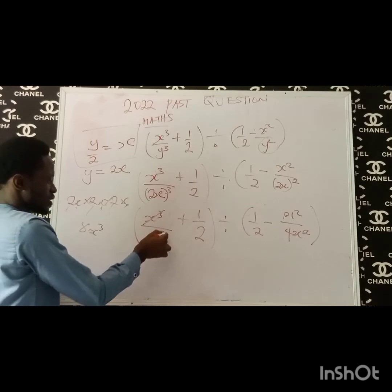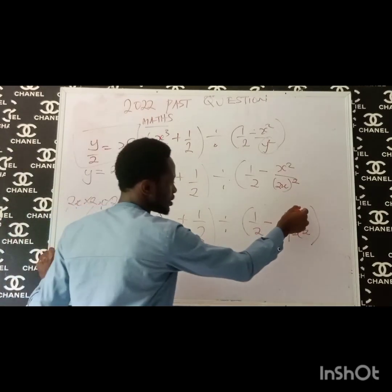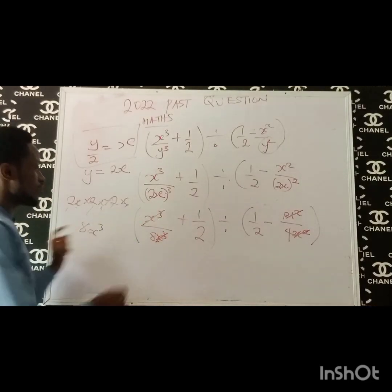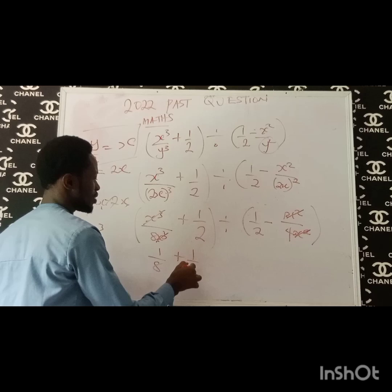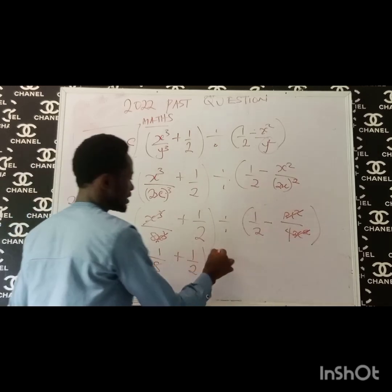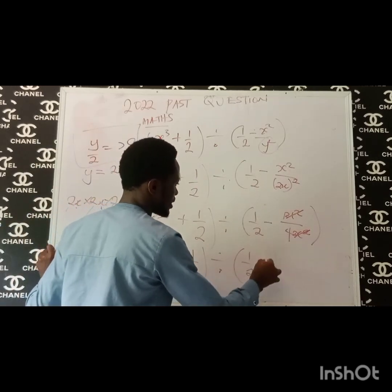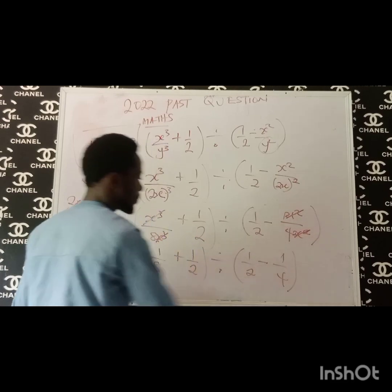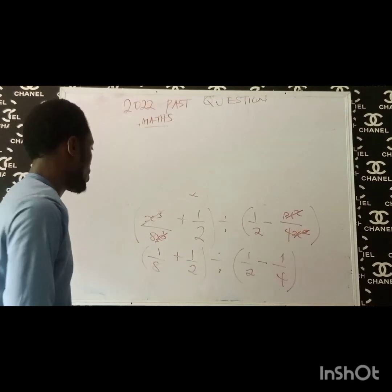So you can see that x cubed will cancel with x cubed in the denominator, and x squared will cancel with x squared. So finally all we have here is 1 over 8 plus 1 over 2, divided by 1 over 2 minus 1 over 4.